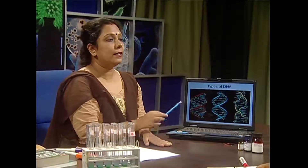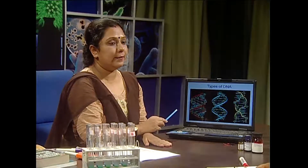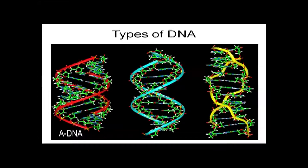Here are the interesting types of DNA: A-DNA, B-DNA, and Z-DNA. B-DNA is the common type of DNA. A and B-DNA are both right-handed, but Z-DNA is left-handed with a zig-zag orientation.